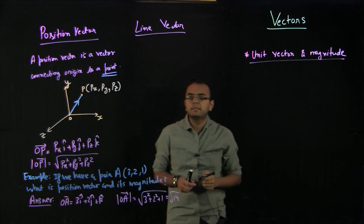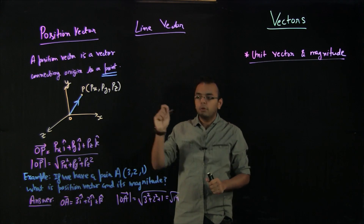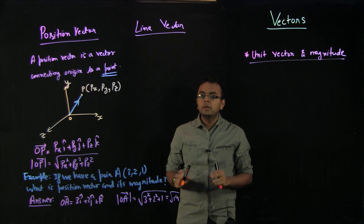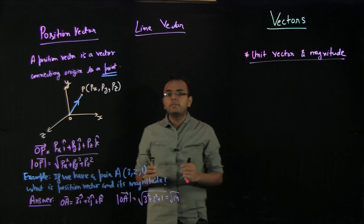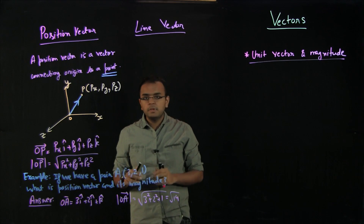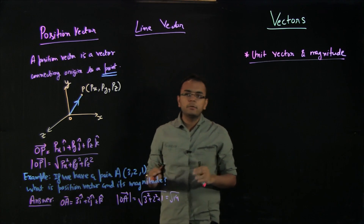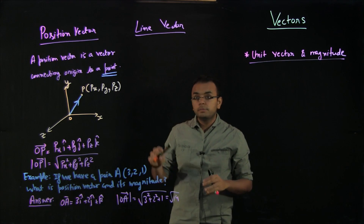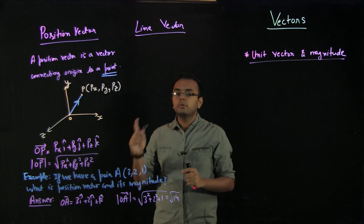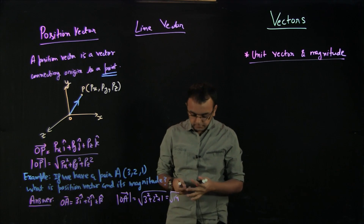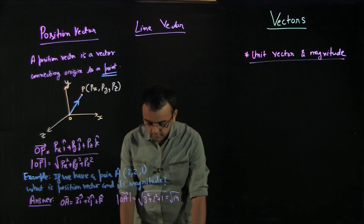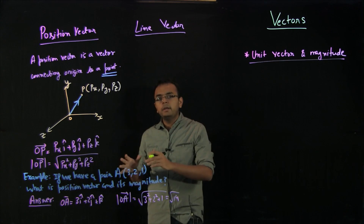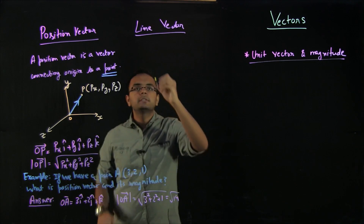Just to emphasize: position vector is always and always for a point. Please do not forget this very basic definition. Trust me, it will cause confusion later in the chapter of vectors if you forget this point. So please try to remember that position vector is always for a point. Now let us move to a new type of vector called the line vector. Position vector is for a point and line vector is for a line — as simple as that.